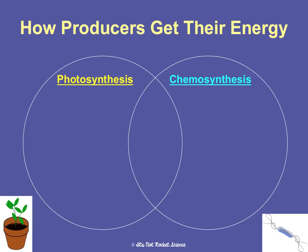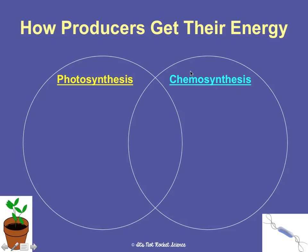Producers get their energy through either photosynthesis or chemosynthesis. 'Synthesis' refers to making. 'Photo' refers to light, so photosynthesis means making food from light. Chemosynthesis means making food from chemicals. Both of these processes use non-living sources for energy — they're making food and energy sources from non-living things.